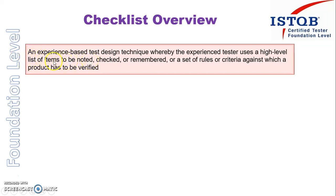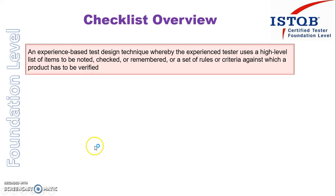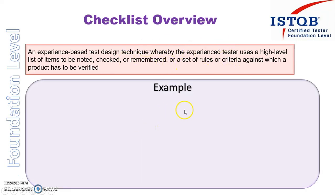He will note down the items which he has to review, check whatever is there in the list, remember all these points, and apply a set of rules or criteria against which a product has to be verified. He will have a set of rules and guidelines in the form of a checklist, and by seeing that checklist he will review the work product. Let's try to understand this with an example.